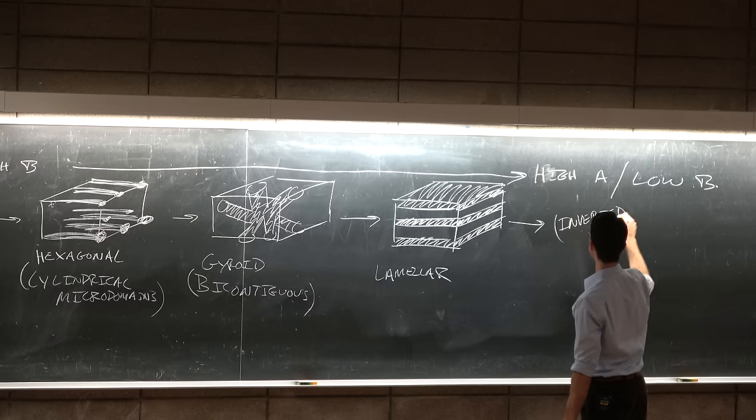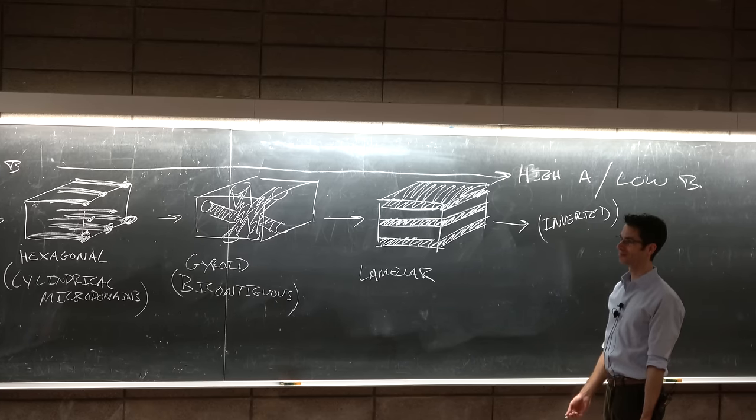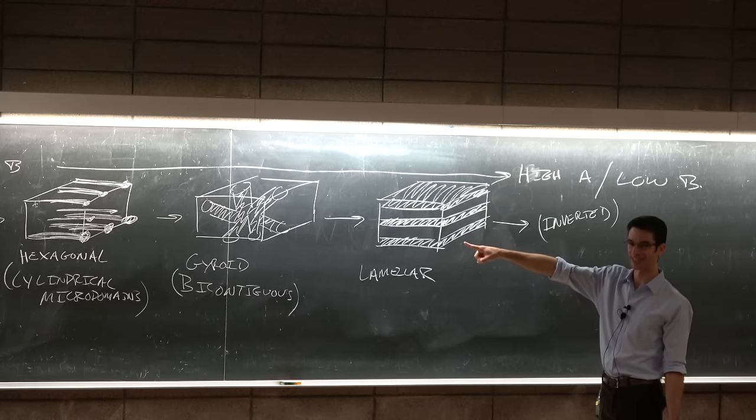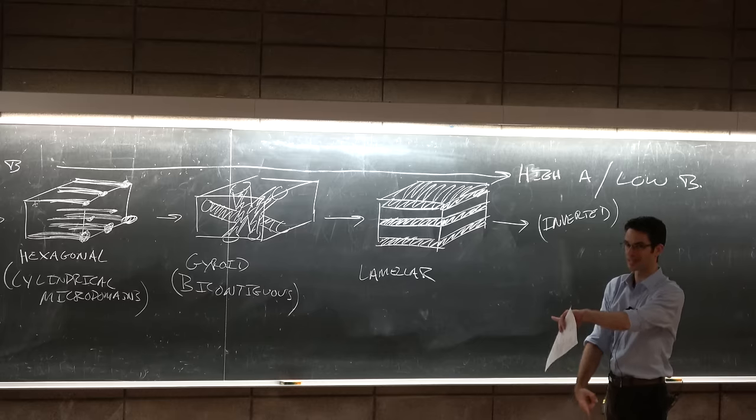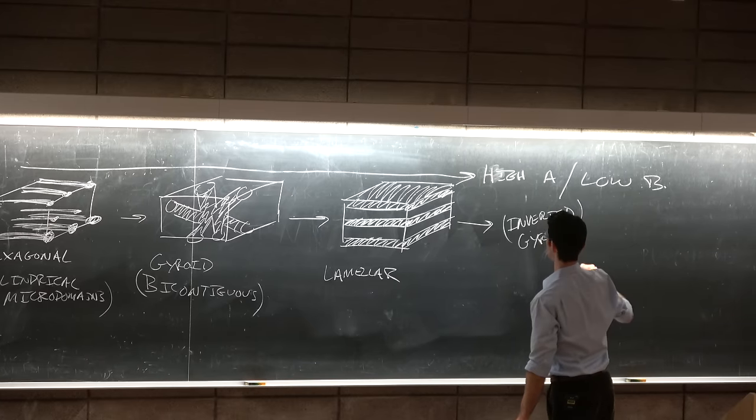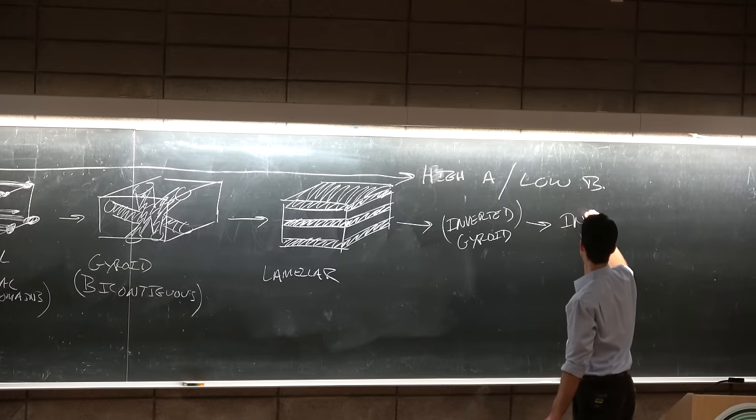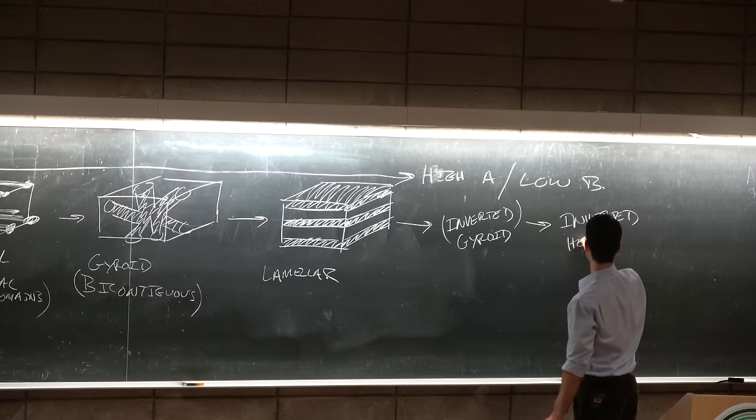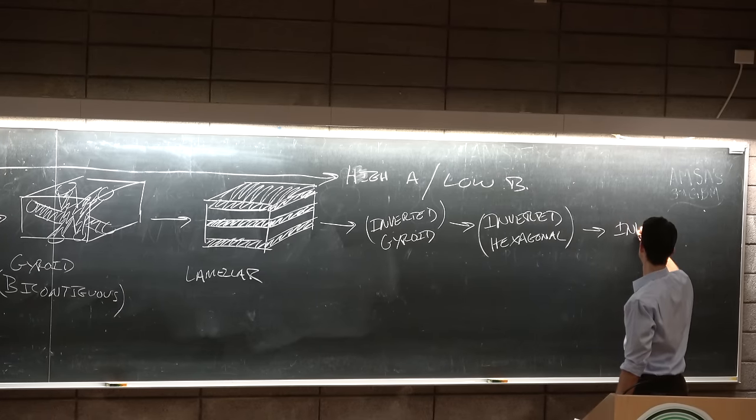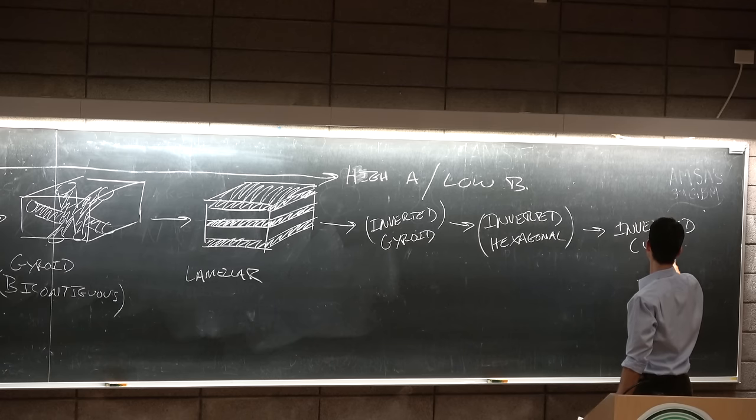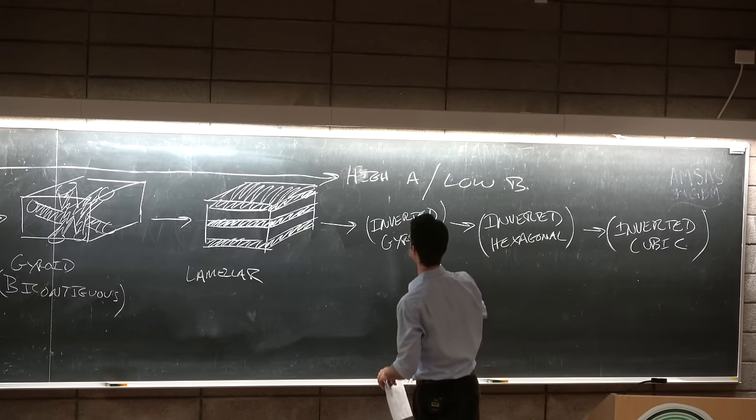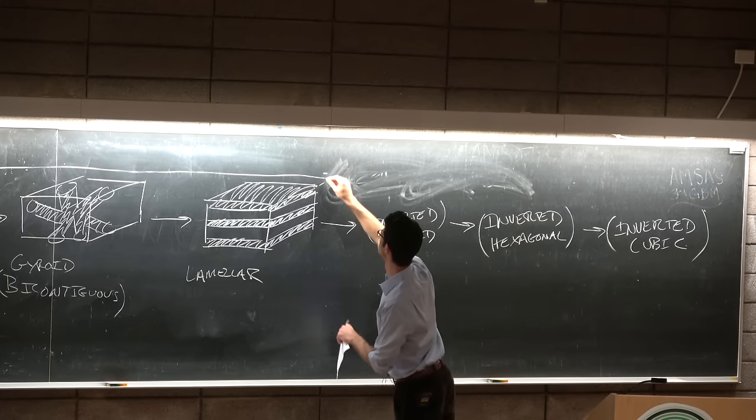Now, inverted is a relative term. It just means that you have the gyroid structure, except that the filled regions and the open regions have switched roles, because now the mole fraction is reversed. And I'm not going to draw it again. The inverted hexagonal. And the inverted cubic. Does that make sense? Really now, since I took up too much space, high A, low B should go all the way at the end.